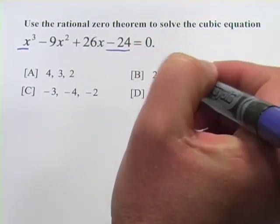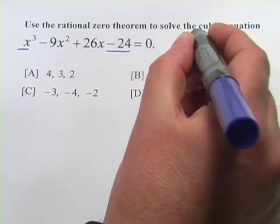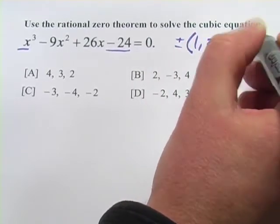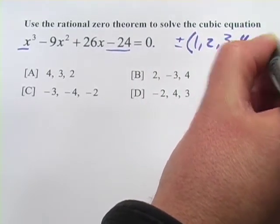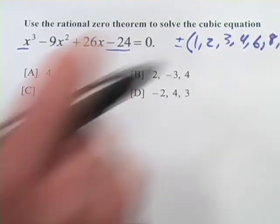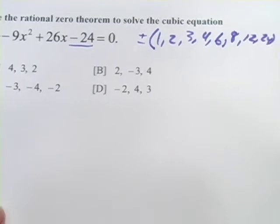So it's just all of the factors of negative 24, which would be positive or negative 1, 2, 3, 4, 6, 8, 12, and 24. So those are all the possible factors.